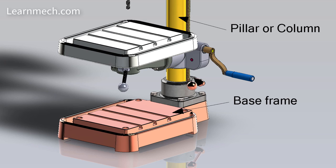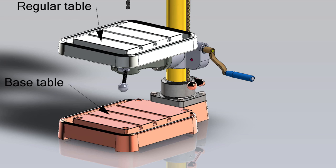Base table is heavy casting and it supports the whole assembly. Column is a vertical round or box section which rests on the base and supports the head and the table. The round column may have rack teeth cut on it so that the table can be raised or lowered depending upon the workpiece requirement.